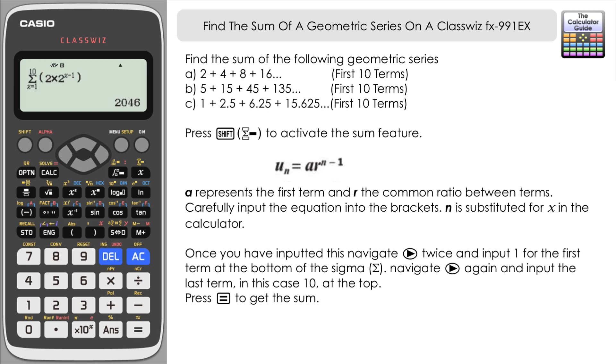Just check that's OK and press equals. And here we have a sum 2,046. So that's the sum of the first 10 terms of our first series.